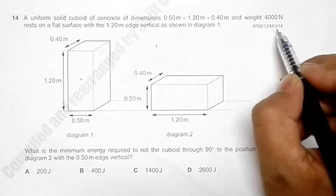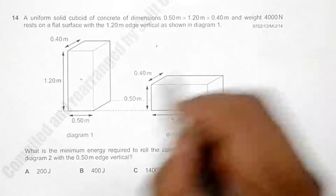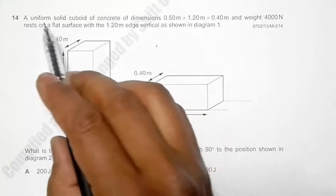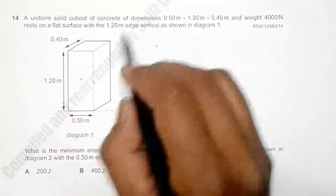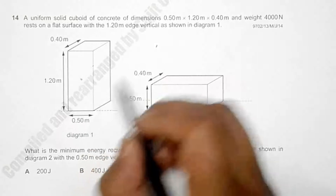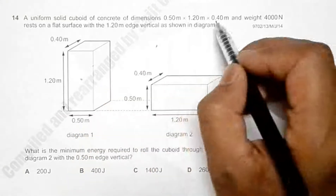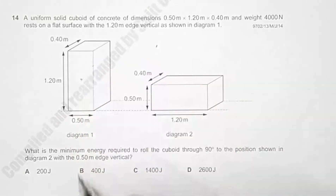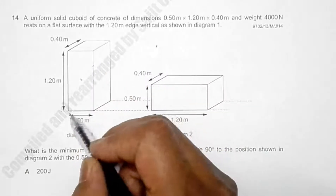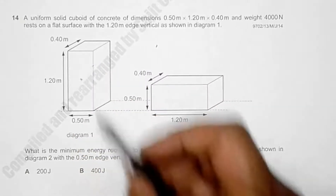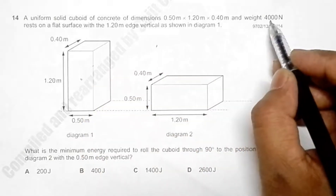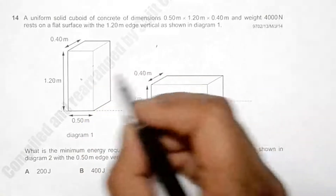This is question 14 from the 2014 major paper 3. We have a uniform solid cuboid of dimensions 0.50 by 1.20 by 0.40 meters, where 1.20 is the height, 1.20 is the breadth, and 0.40 is the thickness. The weight of the cuboid is 4000 Newtons.